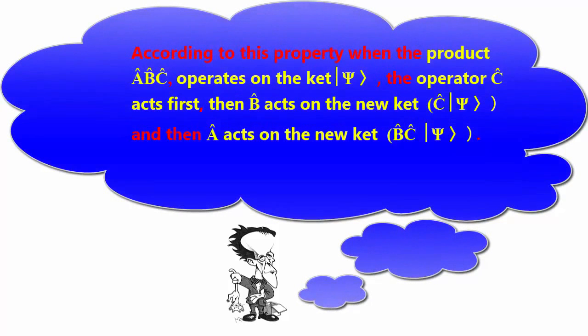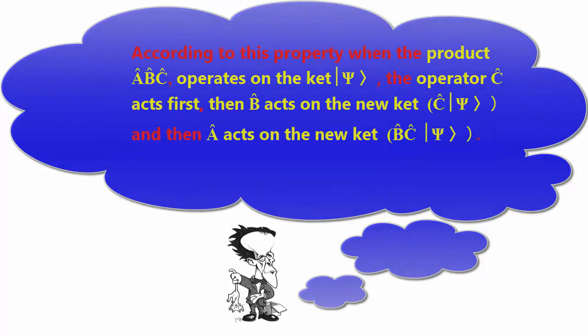According to this property, when the product ABC operates on |ψ⟩, the operator C acts first, then B acts on the new ket C|ψ⟩, and then A acts on the new ket BC|ψ⟩.